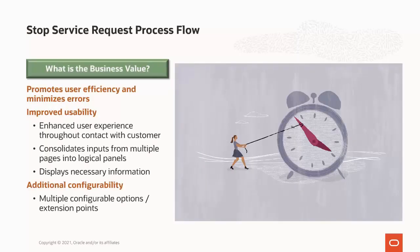Stopping service is one of the key moments in the lifecycle of a utility customer. In this release we have introduced the Stop Service Request Process Flow capability. This helps call center agents process stop service requests efficiently in a consistent manner by guiding them through the common steps and actions for stopping service. A consistent process helps minimize errors, as all the relevant information can be collected at the appropriate time from the customer that is required to successfully process a stop service request.